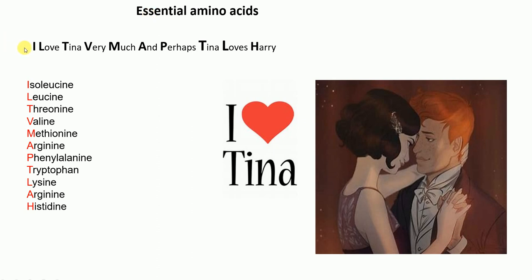The mnemonic for essential amino acids is: 'I love Tina very much and perhaps Tina loves Harry.' I for isoleucine, love L for leucine, Tina T for threonine, very V for valine, much M for methionine, A for arginine, perhaps P for phenylalanine.